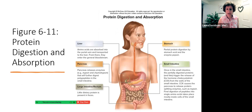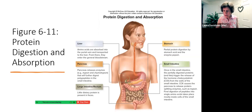Protein digestion begins in the stomach, where acid and enzymes play important roles. It continues in the small intestine, and most of the end products are single amino acids, though some di- and tripeptides are absorbed as well.